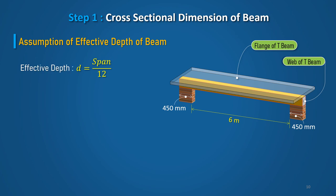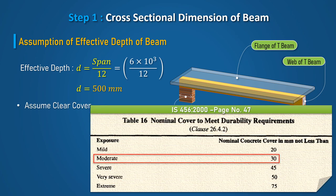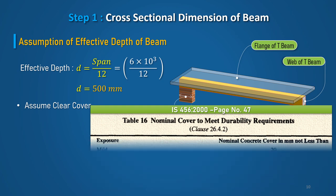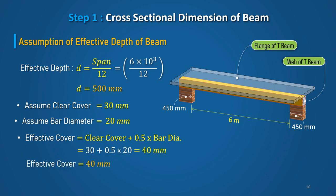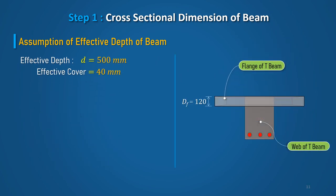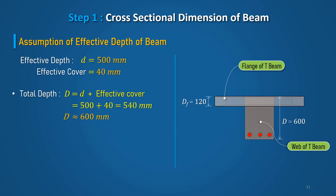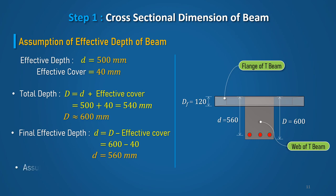Rearranging the equation and putting the value of span as 6m, we get the initial effective depth as 500mm. Assume nominal cover of 30mm for moderate exposure as per table 16 of IS456, and bar diameter as 20mm. The effective cover is calculated by adding the clear cover and half the bar diameter, giving an effective cover of 40mm. The total depth of the beam is 540mm, rounded up to 600mm. The final effective depth is recalculated as 560mm. Assume the web width of the beam as 300mm.